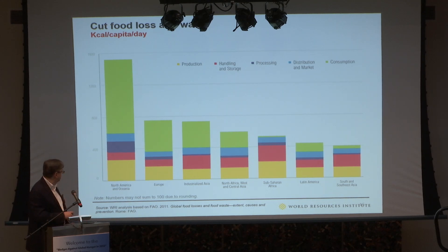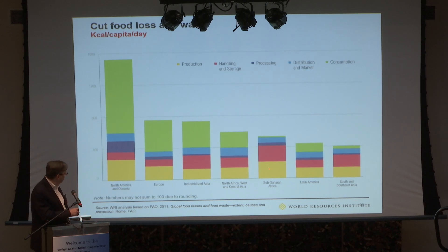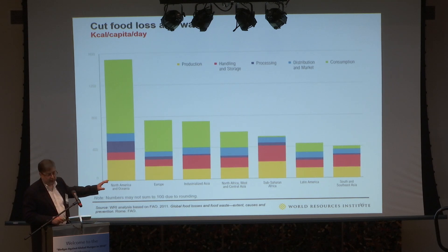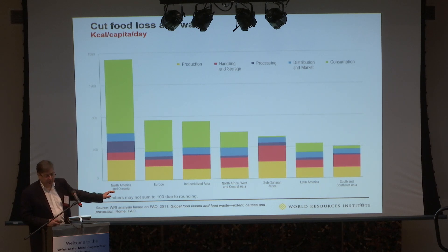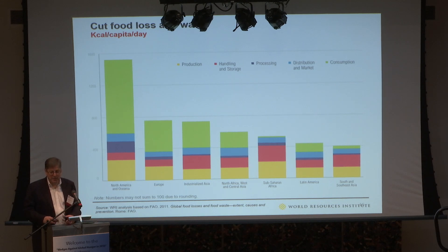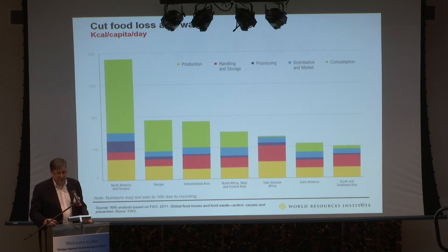In Africa, most food loss and waste occurs during the processing or harvesting part of the process. As Africa develops it will probably lose less food at that stage, but may waste more at the consumption stage. Reducing food loss and waste is often used as a magic asterisk, but it requires technological innovations to make meaningful progress.